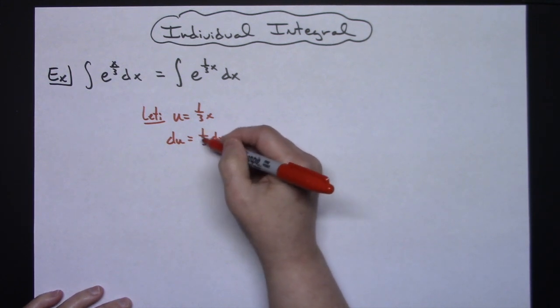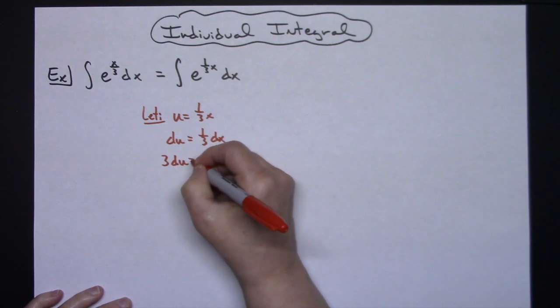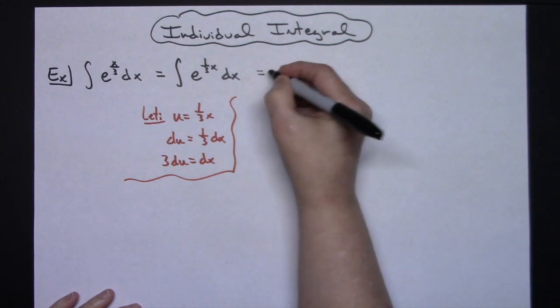I'm going to go ahead and solve all the way down for dx. So in other words, multiplying by that reciprocal I'm going to get 3 du is equal to dx.